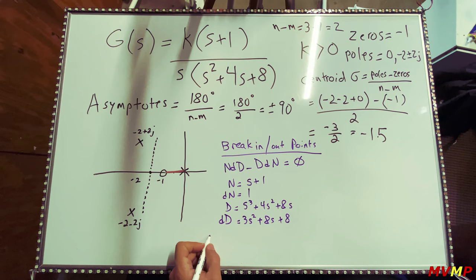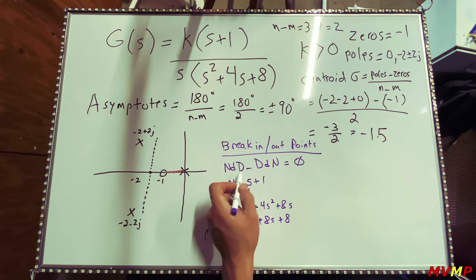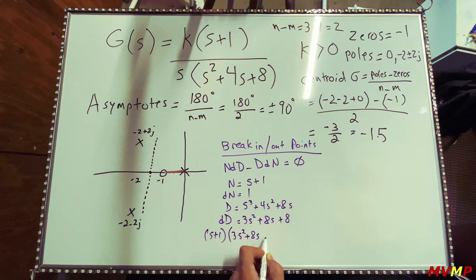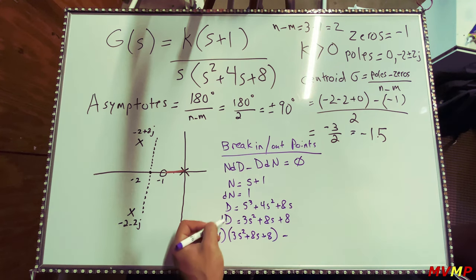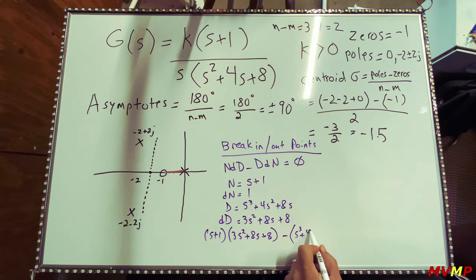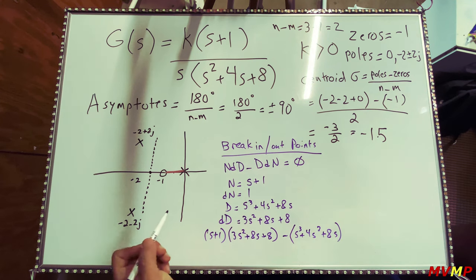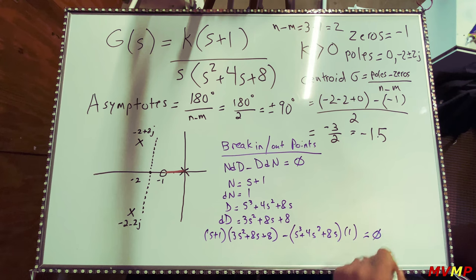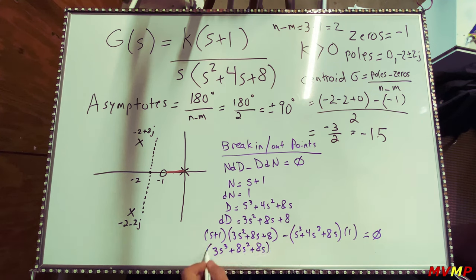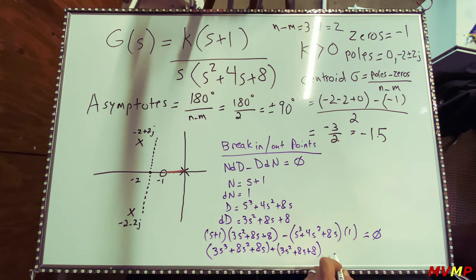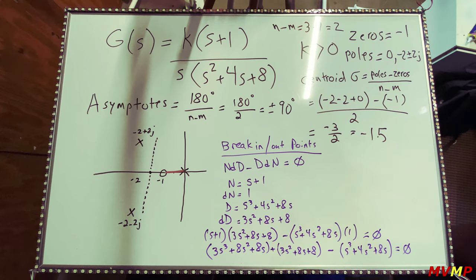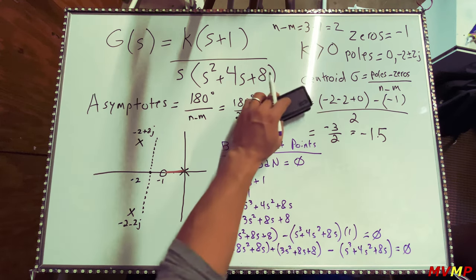Expanding: (s plus 1)(3s squared plus 8s plus 8) minus (s cubed plus 4s squared plus 8s)(1) equals zero. After distributing, you get 3s cubed plus 11s squared plus 16s plus 8 minus s cubed plus 4s squared plus 8s equals zero.